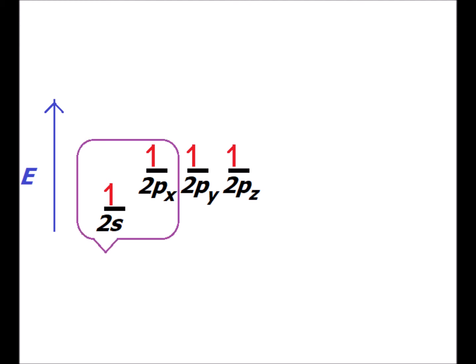We know in compounds such as methane that all four of the carbon-hydrogen bonds have exactly the same length, which suggests that they have the same energy. But it seems surprising because carbon has a 2s orbital and three 2p orbitals, all of which have different energies. We would also like to rationalize the various geometries that carbon can adopt in its different compounds.